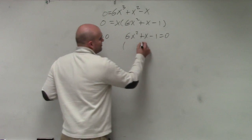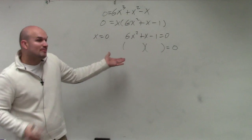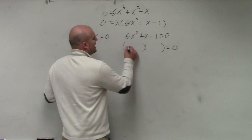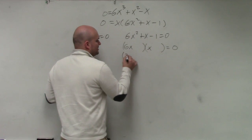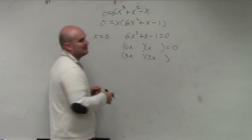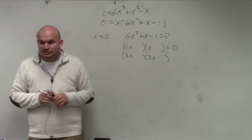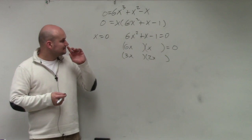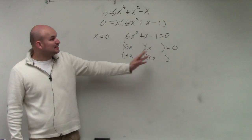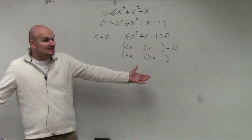We're just going to move forward with the quick way. If I know a trinomial is going to break down into two binomials, my options for my two first terms are 6x and x, or 3x and 2x — that's it, the only two rational options that multiply to give you 6x squared. Then what two numbers multiply to give you negative 1? It's either positive 1 and negative 1, or negative 1 and positive 1. That's your only options.